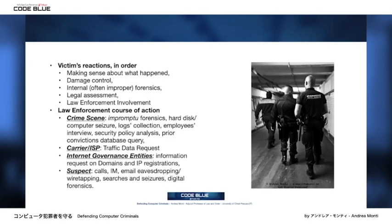As for what happens when law enforcement enters the game, this is a moment where mistakes occur. Once involved, the prosecutor starts a multi-track investigation. Depending on the early existence of a suspect, the prosecutor will tap emails and calls, search the suspect's premises, collect from the crime scene all the information available, and, if the crimes involved the internet, will query ISPs and internet governance entities. This is a crucial part of the investigation.